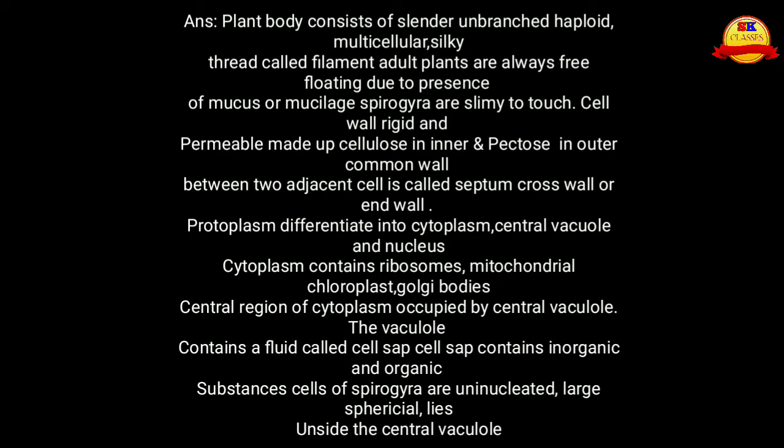The protoplasm is differentiated into cytoplasm, central vacuole, and nucleus. The cytoplasm contains ribosomes, mitochondria, chloroplast, and Golgi bodies. The central region of the cytoplasm is occupied by the central vacuole. The vacuole contains a fluid called cell sap, which contains inorganic and organic substances.